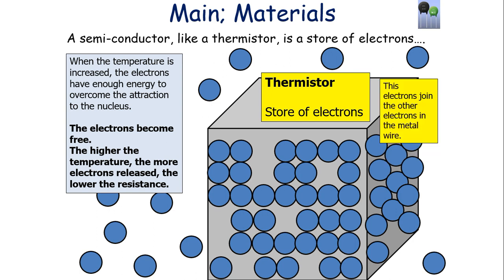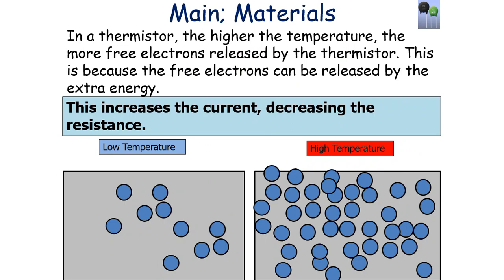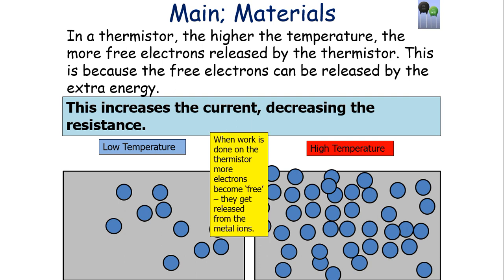The electrons released from the thermistor join the other electrons in the metal wire to give a higher current. So in a thermistor, the higher the temperature, the more free electrons released — because those electrons have been given energy to escape — which increases the current and decreases the resistance. When work is done on the thermistor, more electrons become free, get released from the metal ions, become part of the circuit, and there's a greater current and lower resistance.